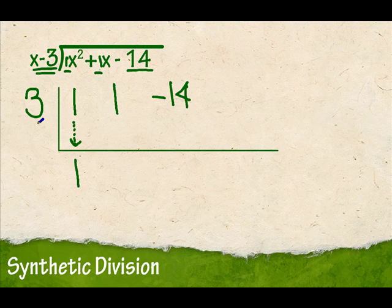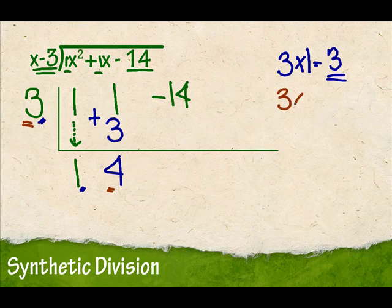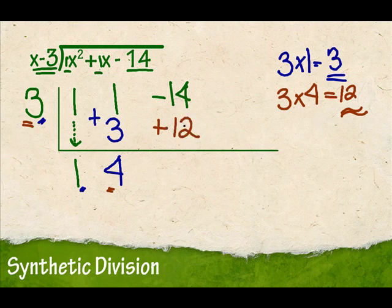Then my next step is to take 3 times this 1. So 3 times 1 is 3. Now this number goes right here, and then I add down. 1 plus 3 is 4. Then I continue: I'm going to take 3 times 4. So 3 times 4 is 12, and that's the number that I'm going to write here — a positive 12. Now I add down. Negative 14 plus 12 is negative 2.